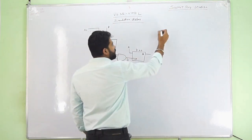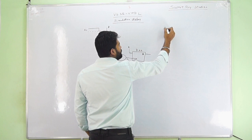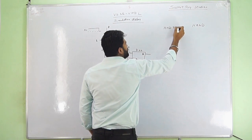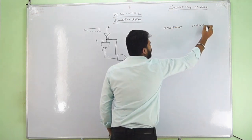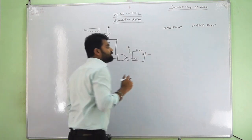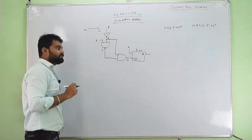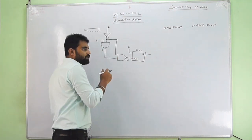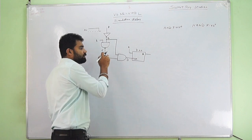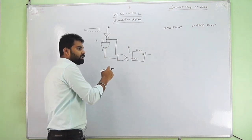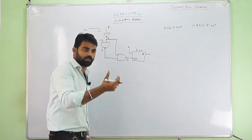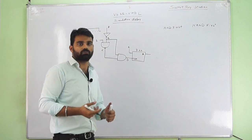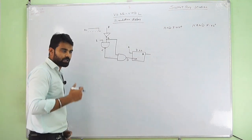If AND works first, or if NAND works first, there is a difference, and that is what causes simulation delay. If NAND is a faster gate than AND, there is a delay in the output. If AND is faster than NAND, then there is a different type of output that originates at a different time.